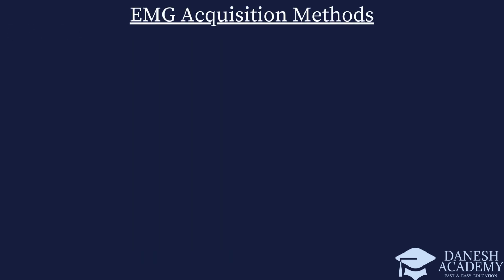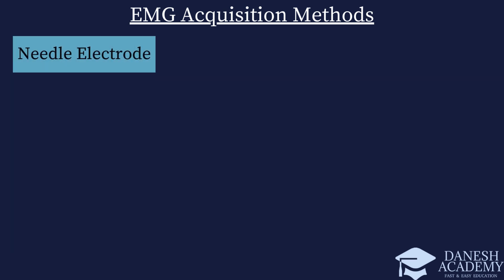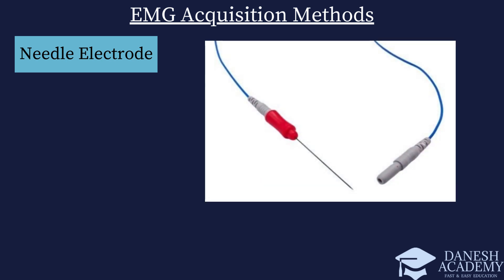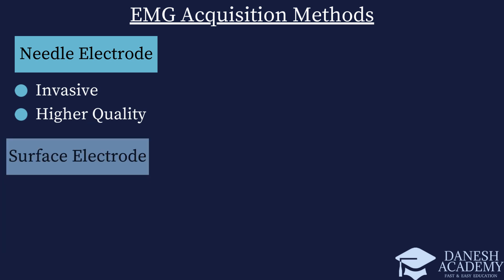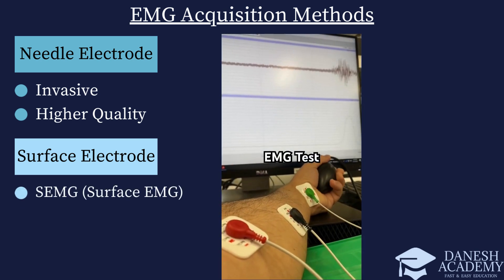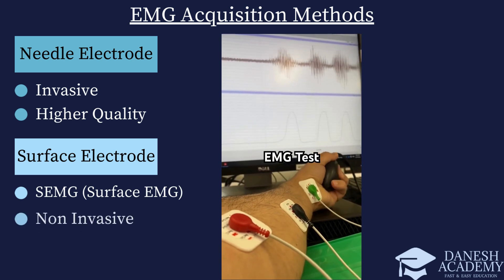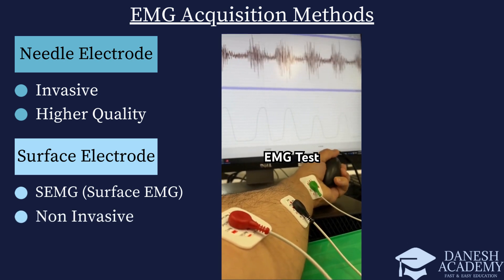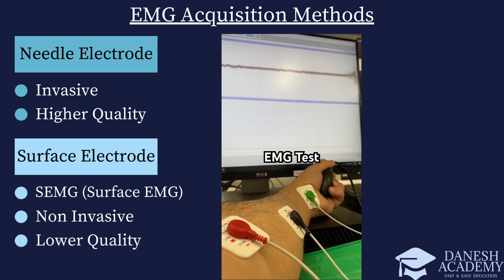Now that we know what EMG is, let's look at how it is acquired. There are two primary types of EMG electrodes. The first is needle electrodes, or inserted electrodes, which involves insertion of electrodes into the muscle tissue. While considered invasive, this method typically provides higher quality signals due to its direct contact with the muscle fibers. The second is surface electrodes — the EMG acquired this way is called surface EMG or SEMG. These electrodes are placed on the skin surface, making them a non-invasive option, though they generally offer lower signal quality.